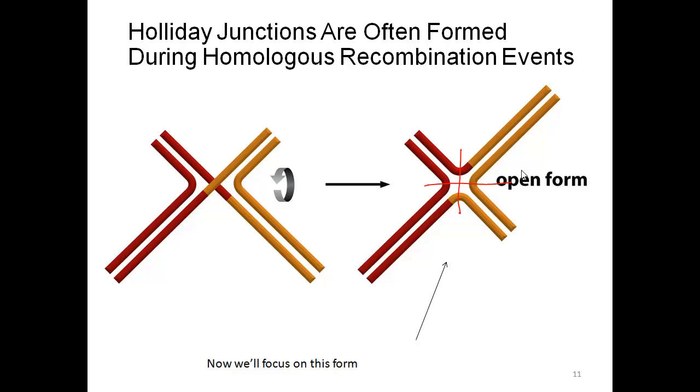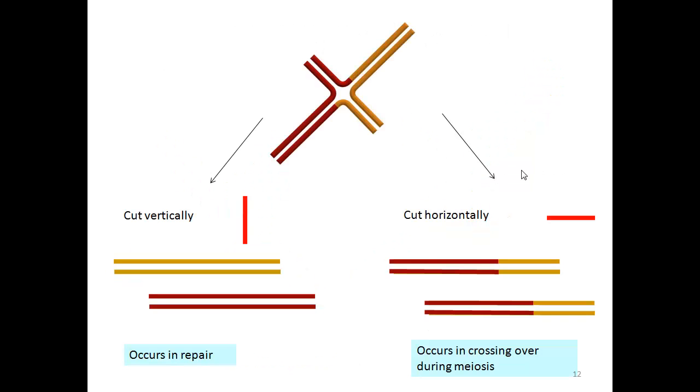This is made even clearer here. Cut it vertically and you have double-strand break repair. Cut it horizontally and you have crossing over as in meiosis. This is a bit challenging to visualize, but work through it and I think you'll be able to see the molecular difference.